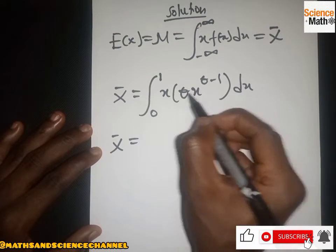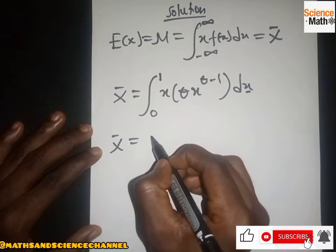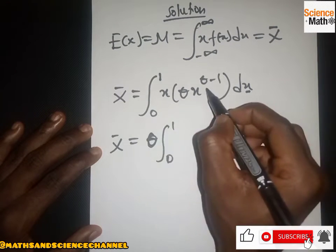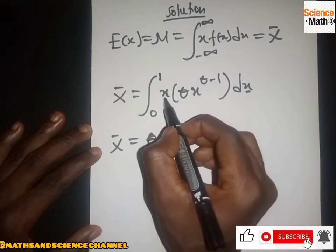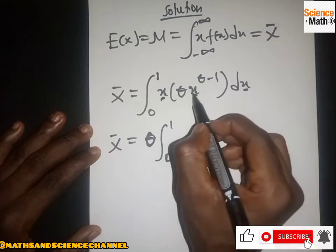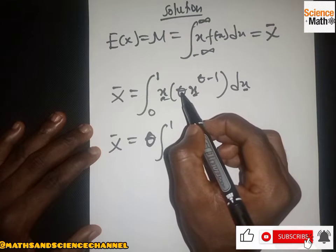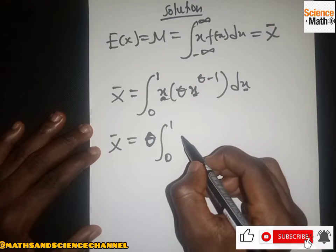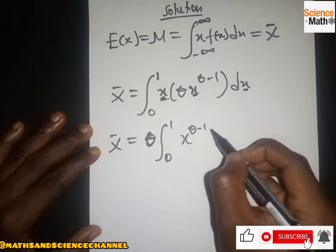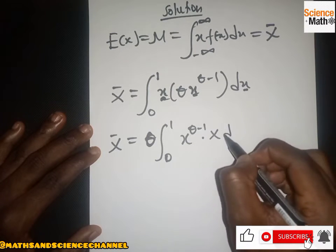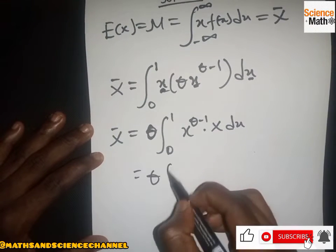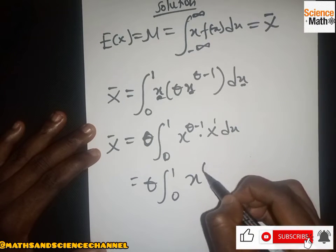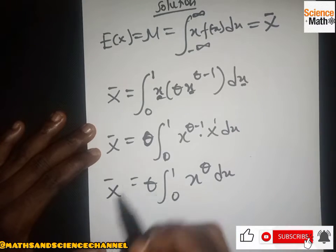Since θ is a constant, we factor θ outside the integral, leaving the integral from 0 to 1. Multiplying x by x^(θ−1): since the bases are the same and they are multiplying, we add the exponents by the properties of indices. Adding the exponents gives x^(θ−1+1), so we just have x^θ dx.